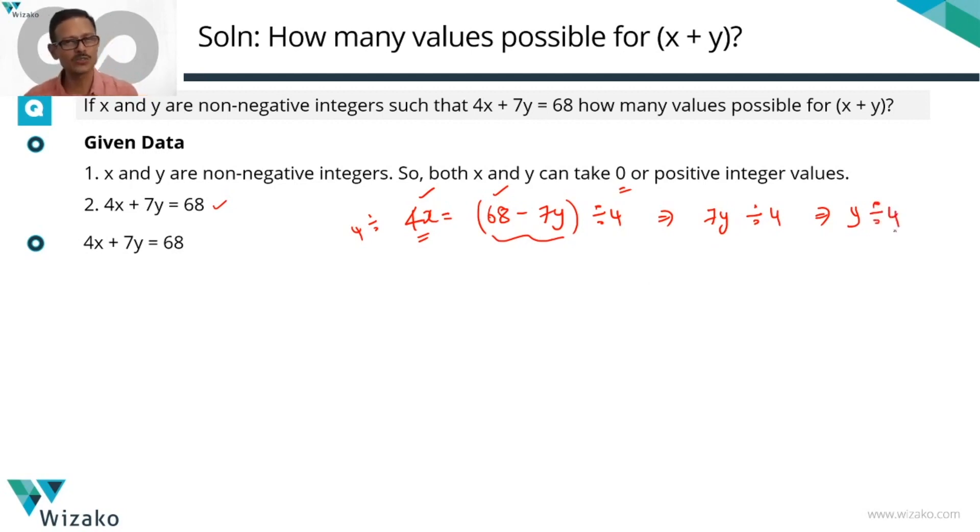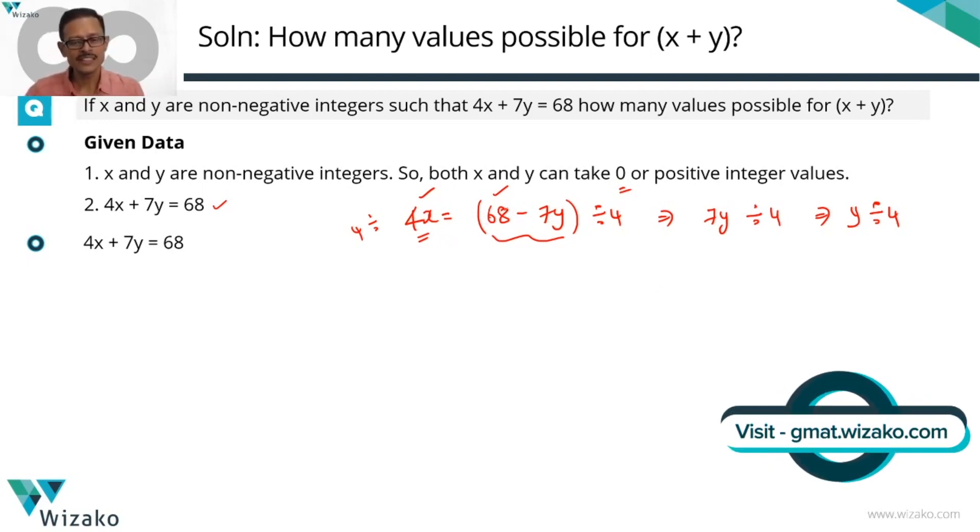I'm going to quickly run through this once more. We have rewritten this equation to get 4x equals 68 minus 7y. 4 times an integer is divisible by 4, obviously, which means 68 minus 7y is divisible by 4. 68 incidentally is divisible by 4, which means that if 68 minus 7y is divisible by 4, 68 being divisible by 4, 7y has to be divisible by 4.